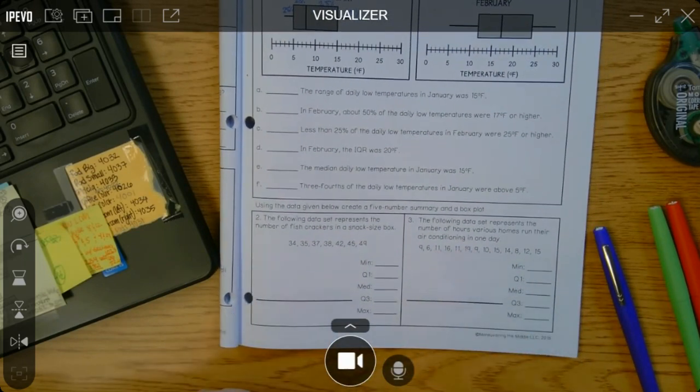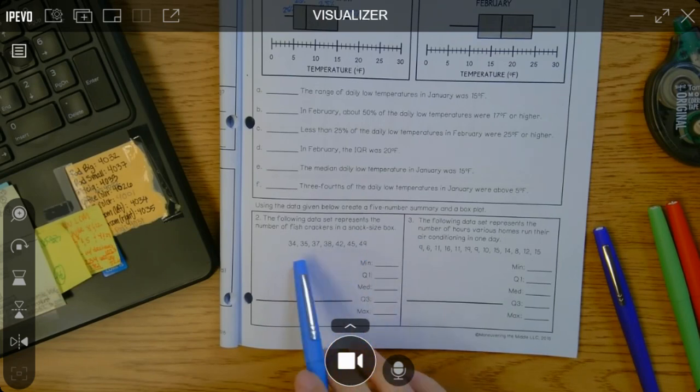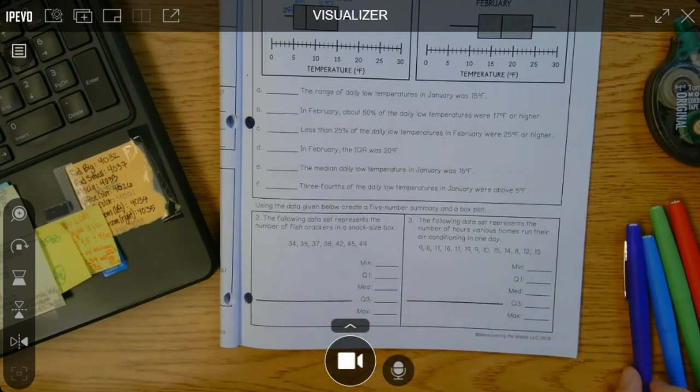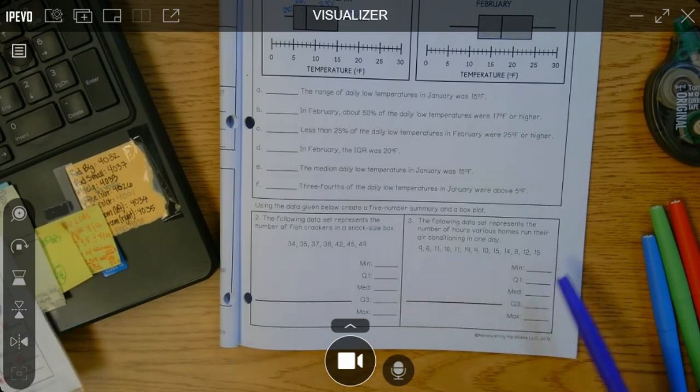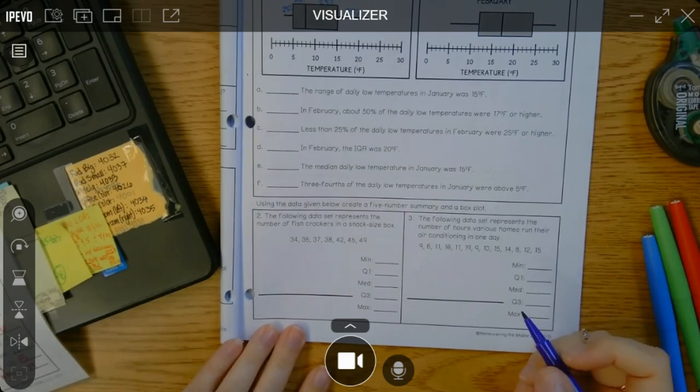Okay. The other thing I want to give you a hint of is this one's already in order. So you can start crossing off to find the median. But before you can do that for this one, you first need to go ahead and put them in order. So pause it, put them in order.